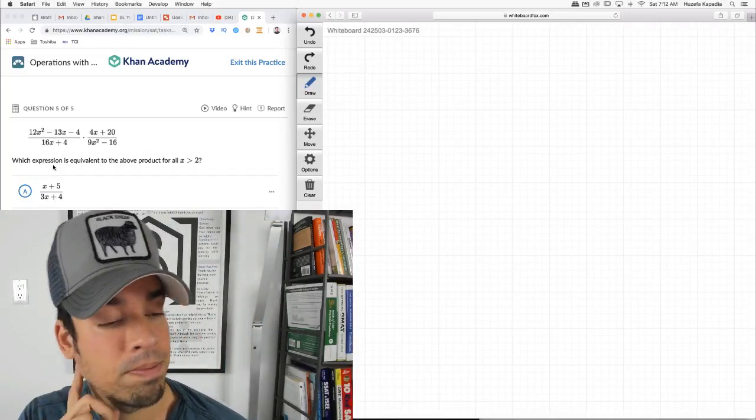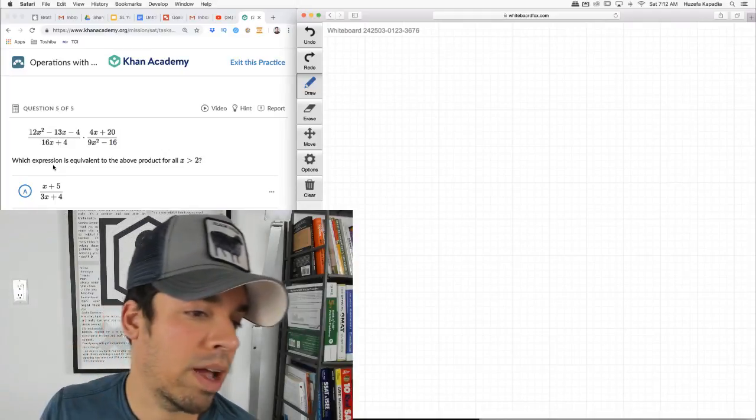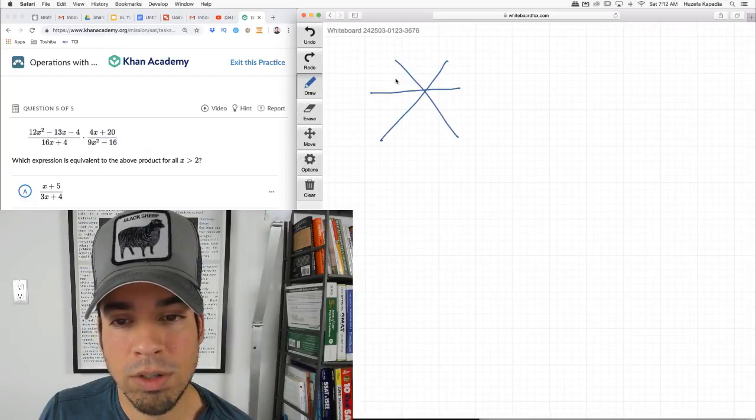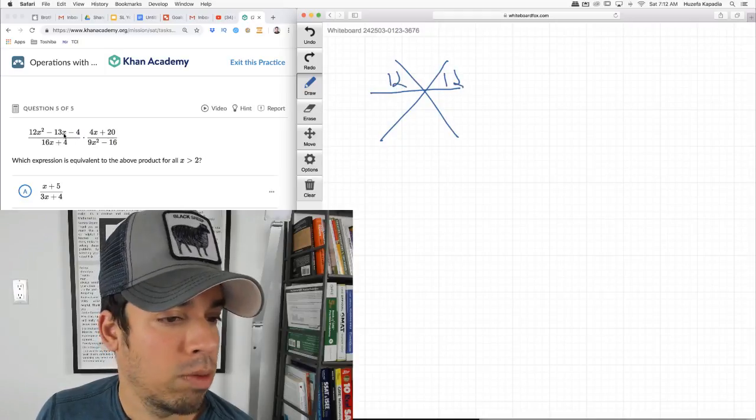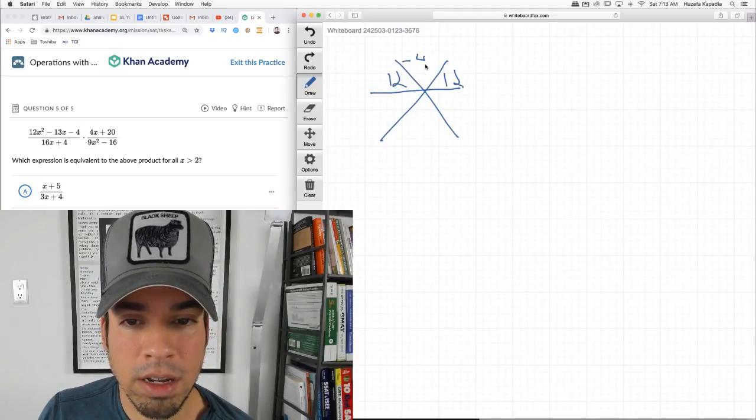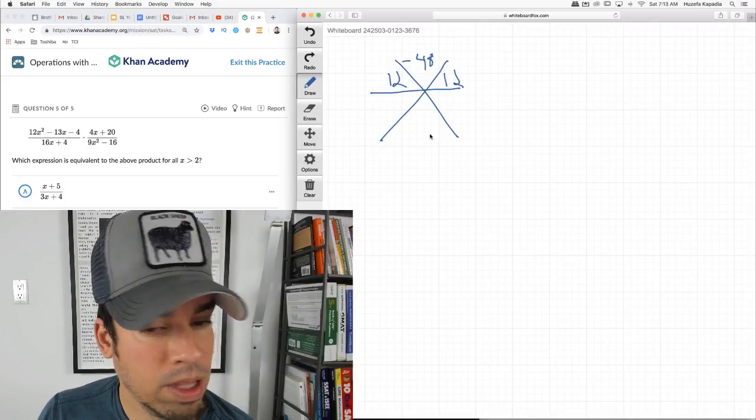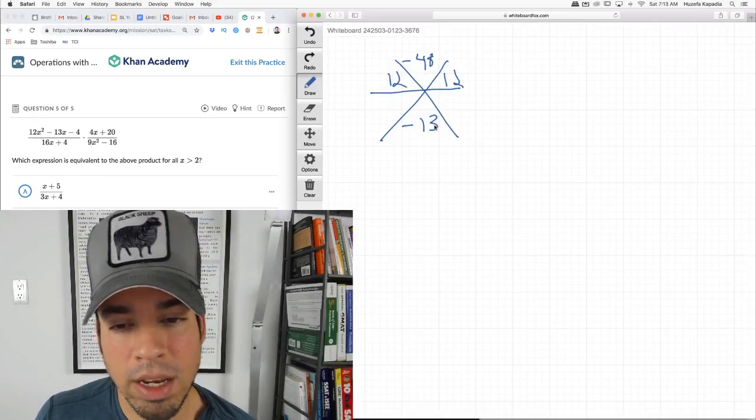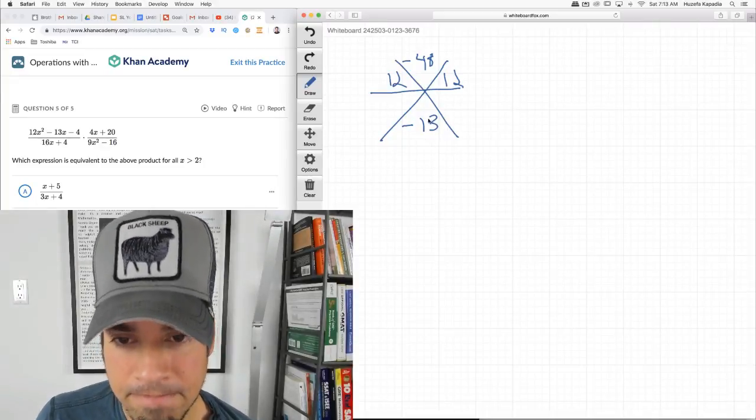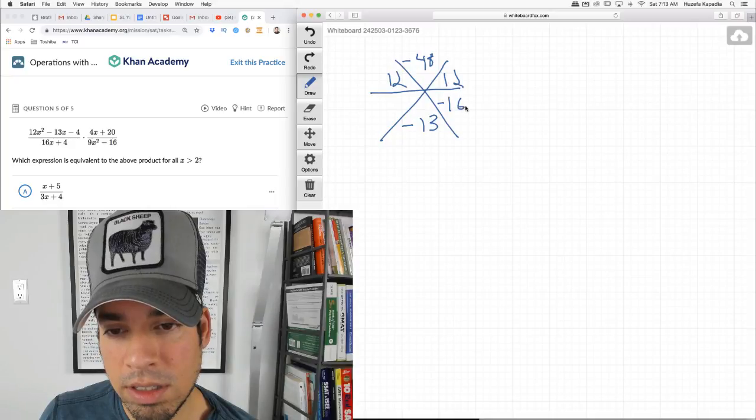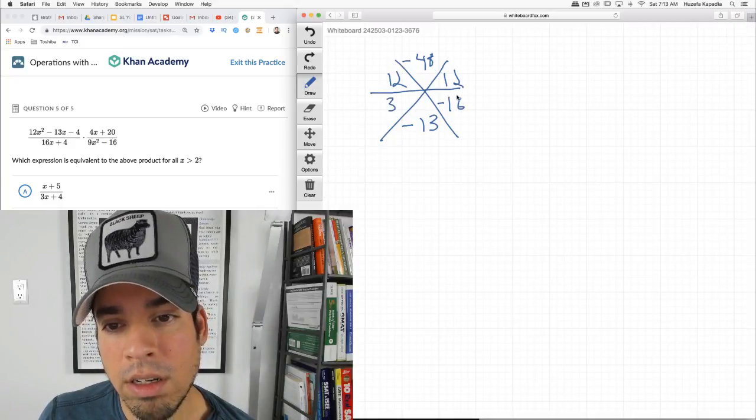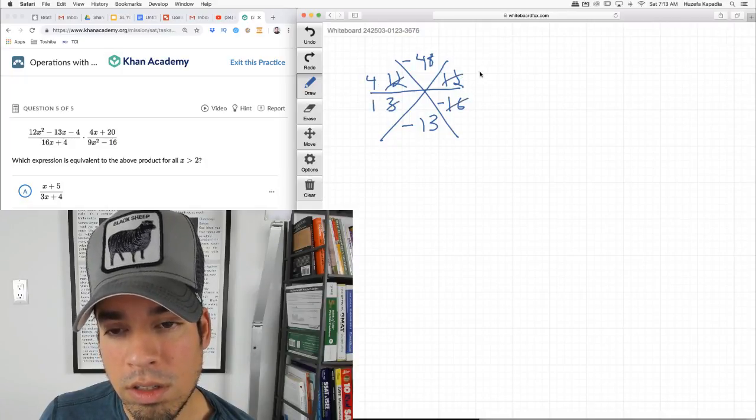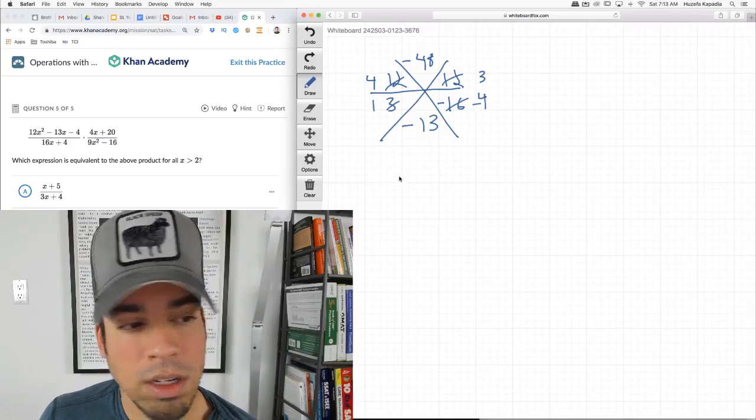This is a bit of a pain to factor, so I'm going to use something called the star method. The star method is pretty cool. You put the a terms here, which is 12 and 12. We put a times c, which is negative 48 up here. And we put that b term, negative 13, here. Now I can figure out what multiplies to negative 48, adds to negative 13. I already know it's negative 16 and positive 3. Then I treat these like fractions. Can I reduce? I can.